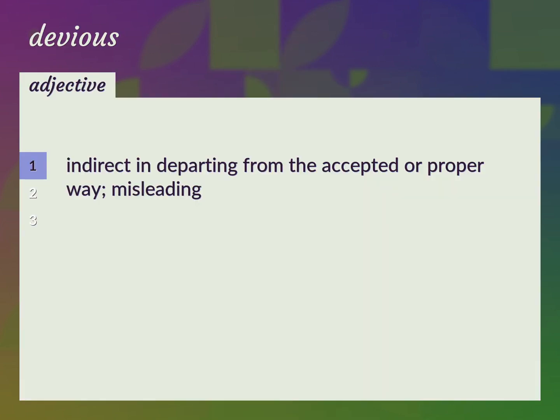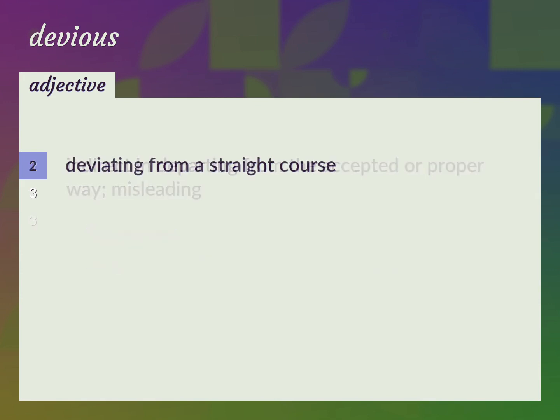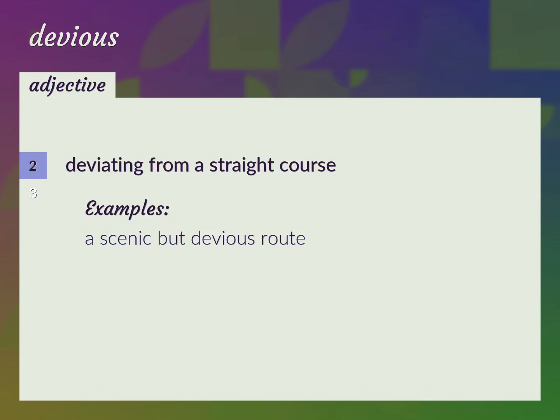Indirect in departing from the accepted or proper way. Misleading. Used devious means to achieve success. Oblique. Deviating from a straight course. A scenic but devious route. Circuitous, roundabout.